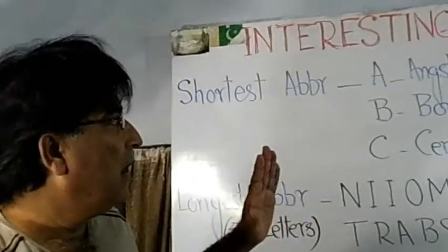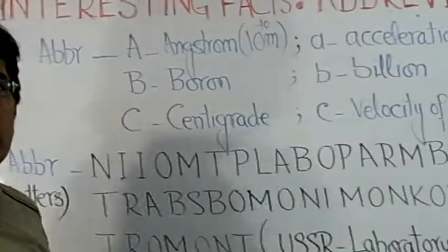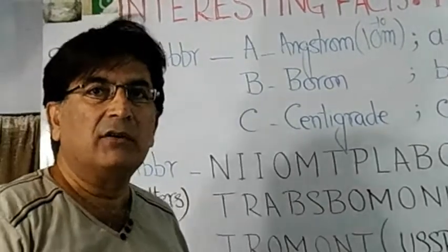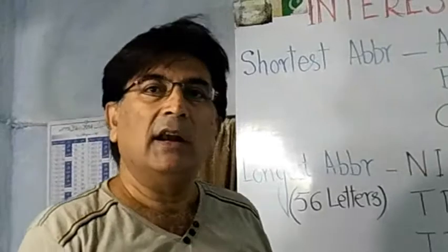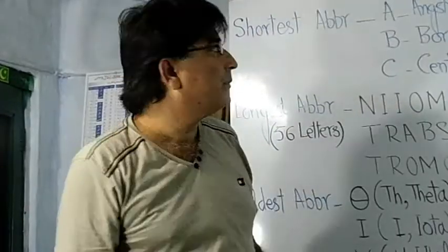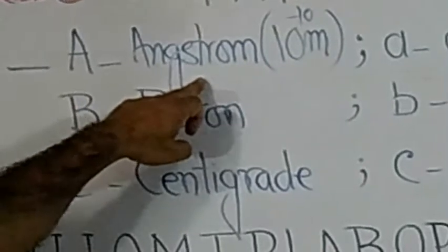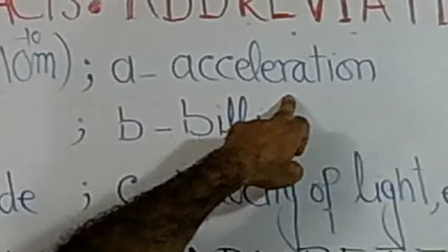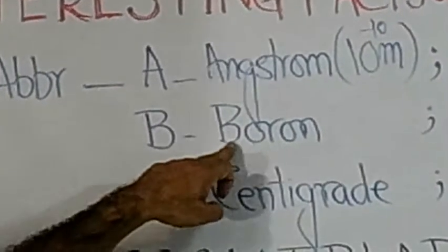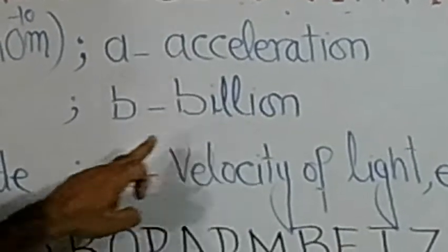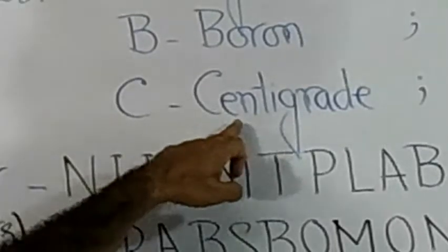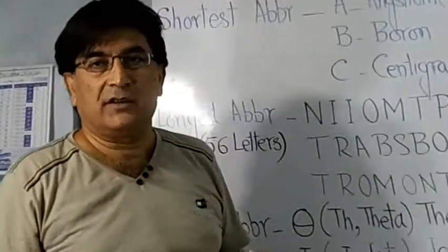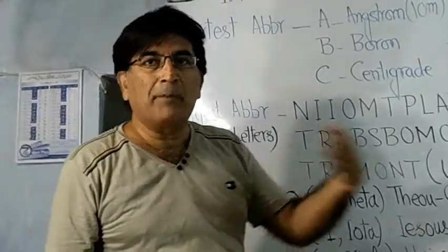Apart from the full stop, if we move ahead, all the alphabets of English from A to Z are used as abbreviations in both capital and small form. For instance, capital A is used for angstrom, which is equal to 10 raised to the power of negative 10 meters, and small a is used for acceleration. Capital B is used for boron, an element, and small b is used for billion. Capital C is used for centigrade and small c is used for velocity of light. These are some of the smallest abbreviations up to C.